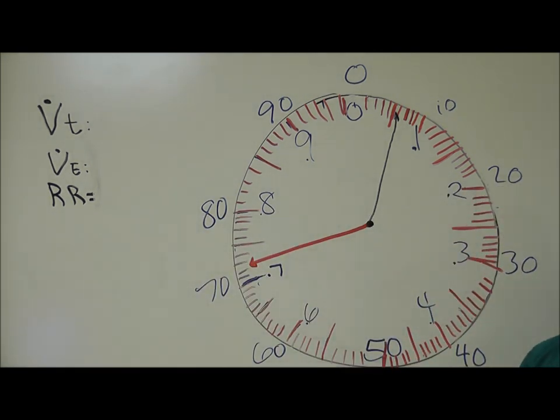Interpreting a Wright spirometer is very similar to interpreting a manual clock. The black hand here is going to be like your hour hand. For our purposes, it represents the liters breathed in that amount of time. The red hand here represents the number of milliliters breathed in the allotted time.